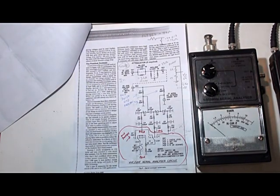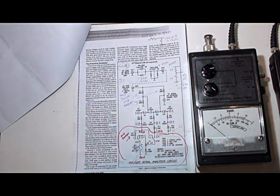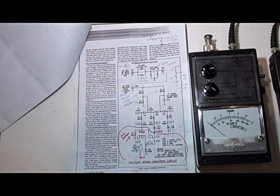It's a very simple design using a bridge. It has a number of Schottky diodes which sense the voltages across the bridge. It gives you an output for standing wave ratio, resistance, and the ability to set full scale deflection.